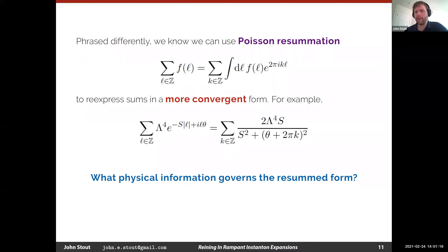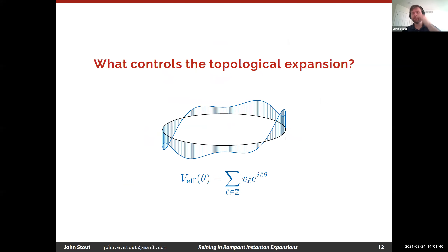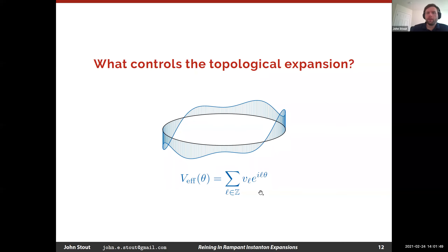Is the motivation clear? I want to understand what it means when an instanton expansion fails, because that happens in interesting limits of these quantum gravitational theories. Now that we have all the definitions and the motivation, what we want to do is understand what controls the convergence of this topological expansion.